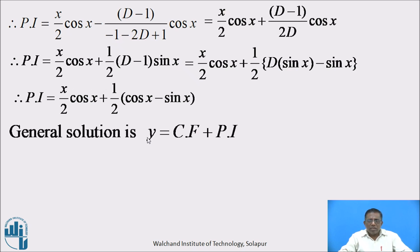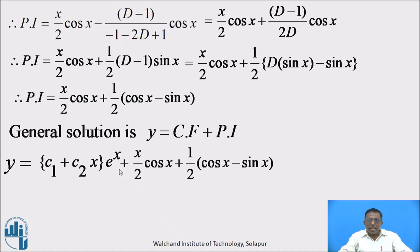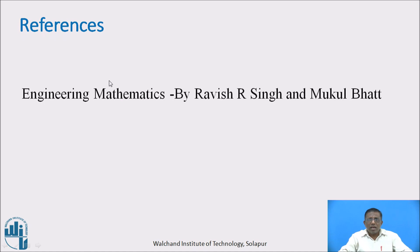Hence the general solution is y = CF + PI. Therefore y = (c₁ + c₂x)·e^x + (x/2)cos(x) + (1/2)(cos(x) - sin(x)). This is the required answer to the given differential equation. To prepare this video lecture, I referred to this book as a reference. Thank you.